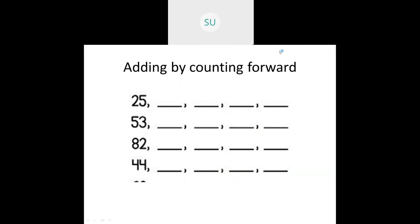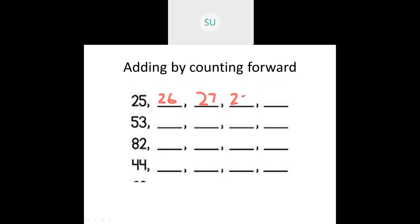The next method is to add by counting forward. Here I have four blanks — we have to do plus four for all of them. So 25 plus four: after 25 we count forward — 26, 27, 28, and then 29. So 25 plus four is 29. You count forward and add. This is adding by counting forward.